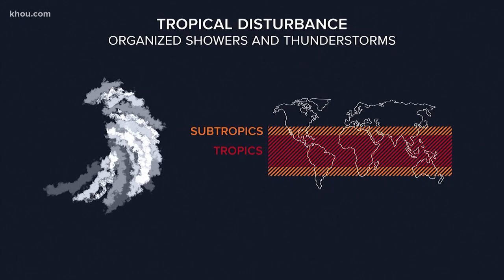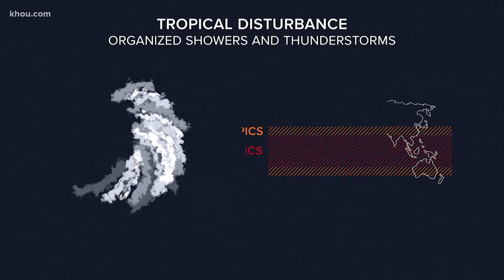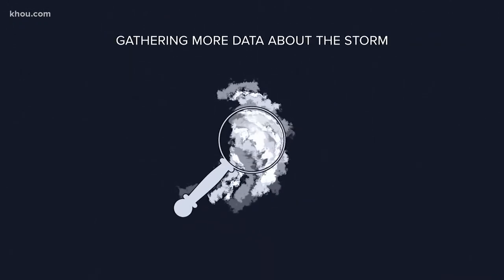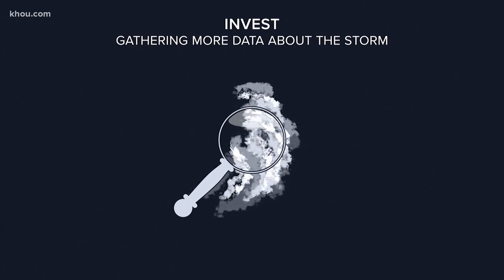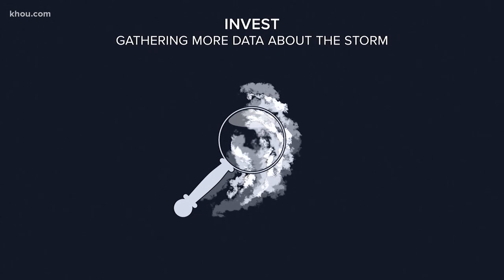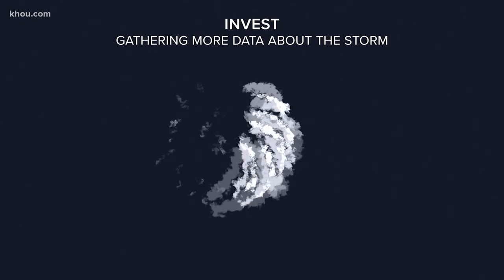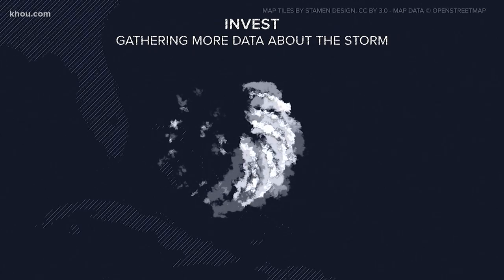If a tropical forecast center like the Hurricane Center is interested in gathering more information or data about a specific weather system that may develop, it will then be called an invest. But just because it's called an invest, that doesn't necessarily correspond to a particular likelihood of development.